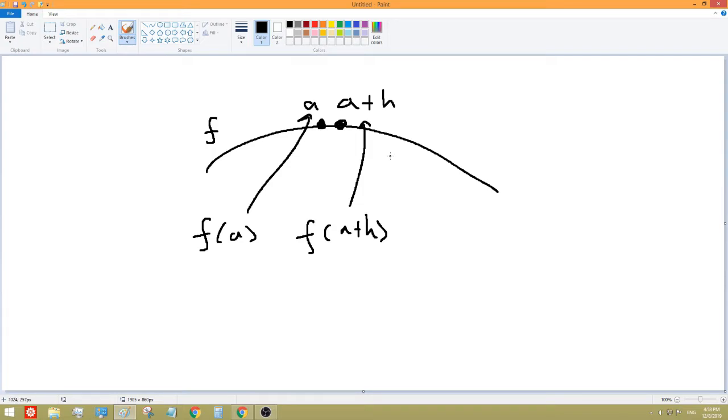So eventually, as they get infinitely close, also meaning that H is getting infinitely close to zero because they're getting really close to each other, then we would have the exact slope of that red line I was talking about earlier. Of that red line going straight from like only touching it at A.